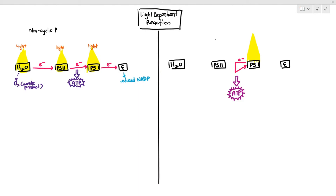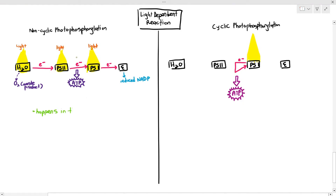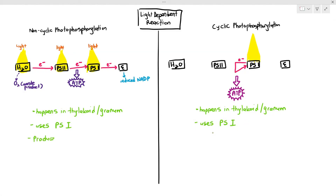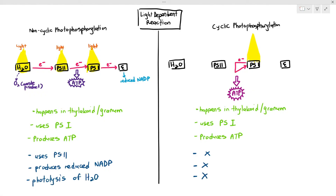The summary of light-dependent reaction is as follows. It is split into two major processes: non-cyclic photophosphorylation and cyclic photophosphorylation. Both happen in the thylakoid or granum and both use photosystem I to produce ATP. Non-cyclic photophosphorylation also uses photosystem II, produces reduced NADP, and photolysis of water occurs to produce oxygen. For cyclic photophosphorylation, photosystem II is not used, reduced NADP is not produced, and photolysis of water does not occur.